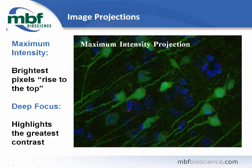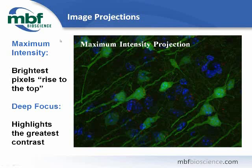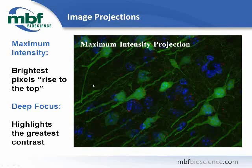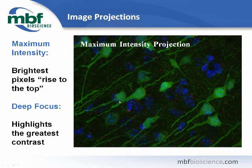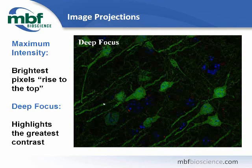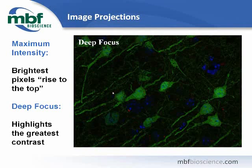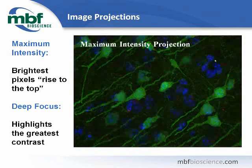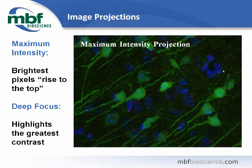When you have an image stack, you can also create projection images helpful for presentation or publication. The maximum intensity projection brings all the brightest pixels from the stack to the top when the image is flattened, so each individual channel's brightest pixels create the component image. Contrasting that is the deep focus projection, which highlights areas of greatest contrast — particularly useful when you have very punctate regions of label. You can choose which projection you like and save them independently of the image stack.